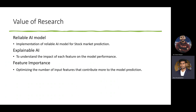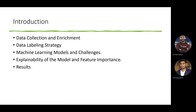The value of our research is mainly towards implementing a reliable AI model for stock market prediction. Our research is mainly focused towards the feature importance and explainability of the model, which will help us understand the impact of each feature on model prediction. We will discuss our data collection and enrichment methods, data labeling strategy, machine learning models, challenges, feature importance and explainability, and results at the end.